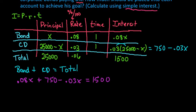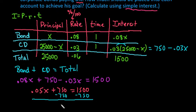So we would simply solve this equation. I would combine my like terms. So I have 0.05X plus 750 equals 1,500. We would subtract the 750. So we end up with 0.05X equals $750.